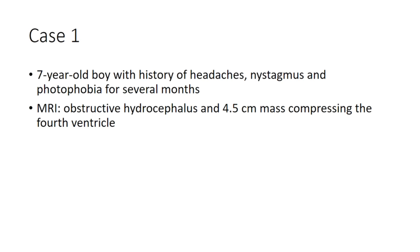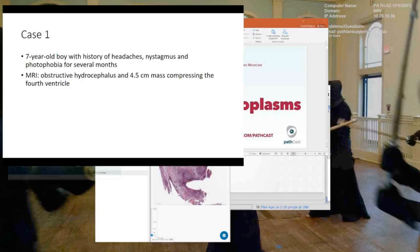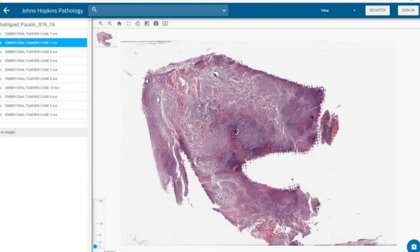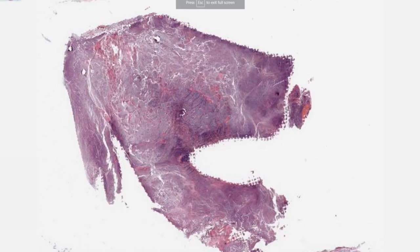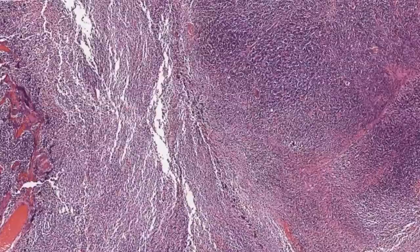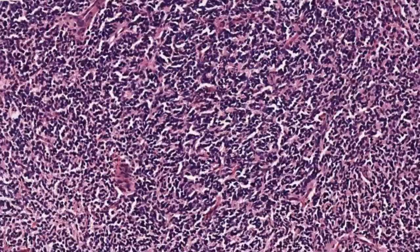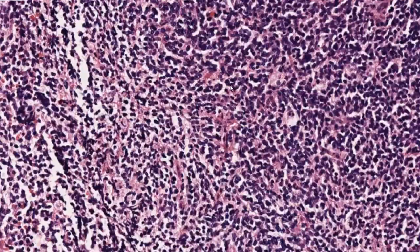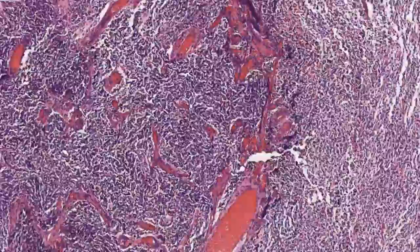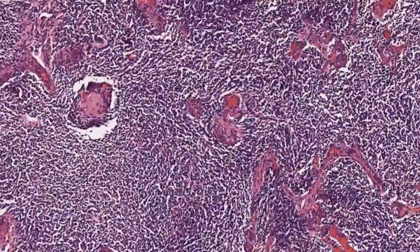Case number one: a seven-year-old boy with a history of headaches, nystagmus, and photophobia for several months. MRI demonstrates obstructive hydrocephalus and a 4.5-centimeter mass compressing the fourth ventricle. On histology, from low power, the tumor is really blue, composed of cells that have high nucleocytoplasmic ratios — so you can approach this from the viewpoint of a round blue cell tumor.